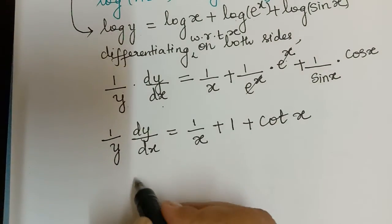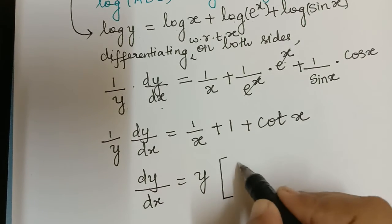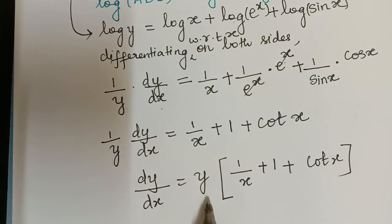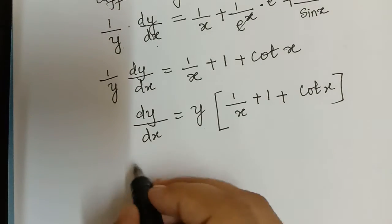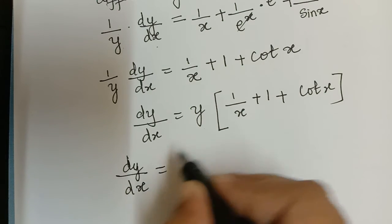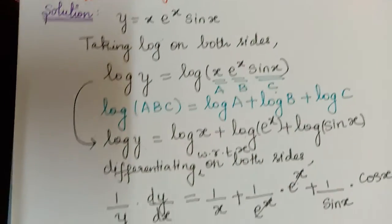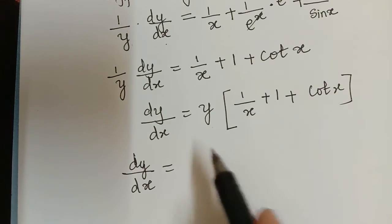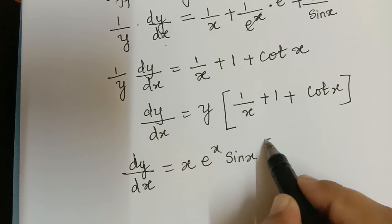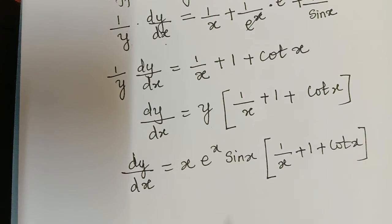Finally, we want dy by dx. So dy by dx will be equal to y multiplied with 1 by x plus 1 plus cot x. Substituting y, which is given as x e power x sin x, the final answer is dy by dx equals x e power x sin x multiplied with 1 by x plus 1 plus cot x.